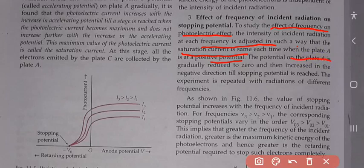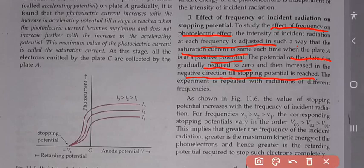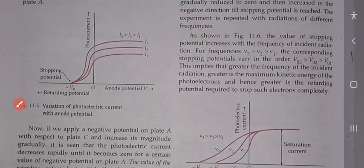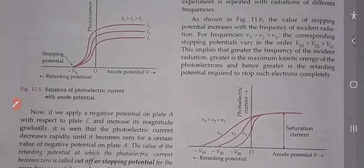Positive potential apply करने के बाद हम उसे gradually zero की तरफ reduce करते हैं, then increase in the negative direction till the stopping potential is reached — zero से फिर negative direction की तरफ ले जाते हैं जब तक stopping potential न मिल जाए। The experiment is then repeated with radiation of different frequencies.